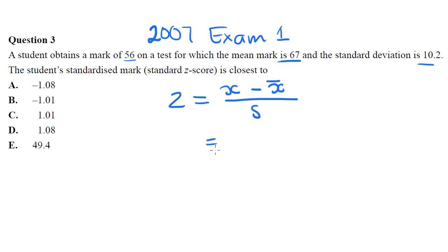So in this case, our observed value, our x, is 56, our mean is 67, and our standard deviation is 10.2. So you just plug that into your calculator, and you get negative 1.08, and there you have it. The answer is A, and that's z-scores.